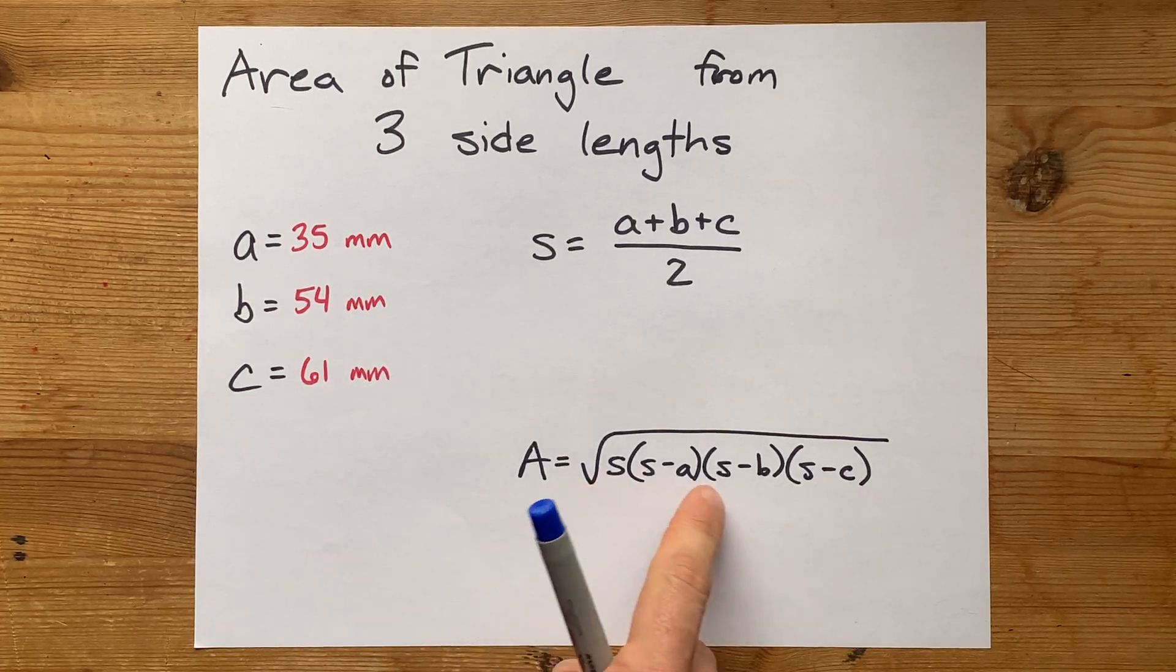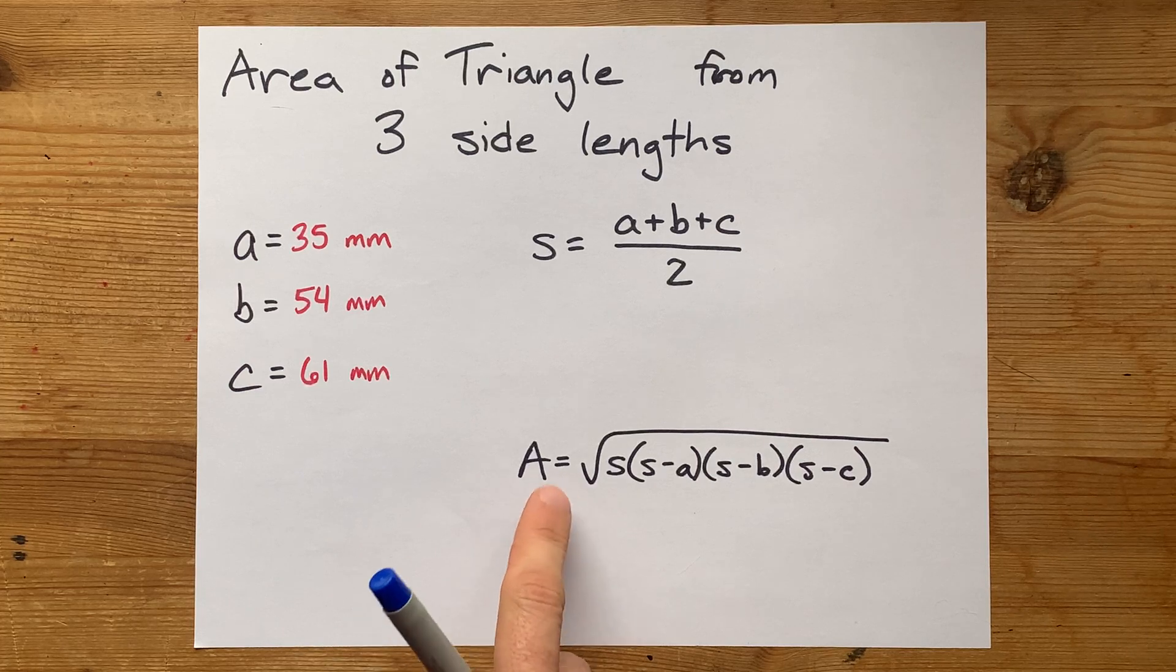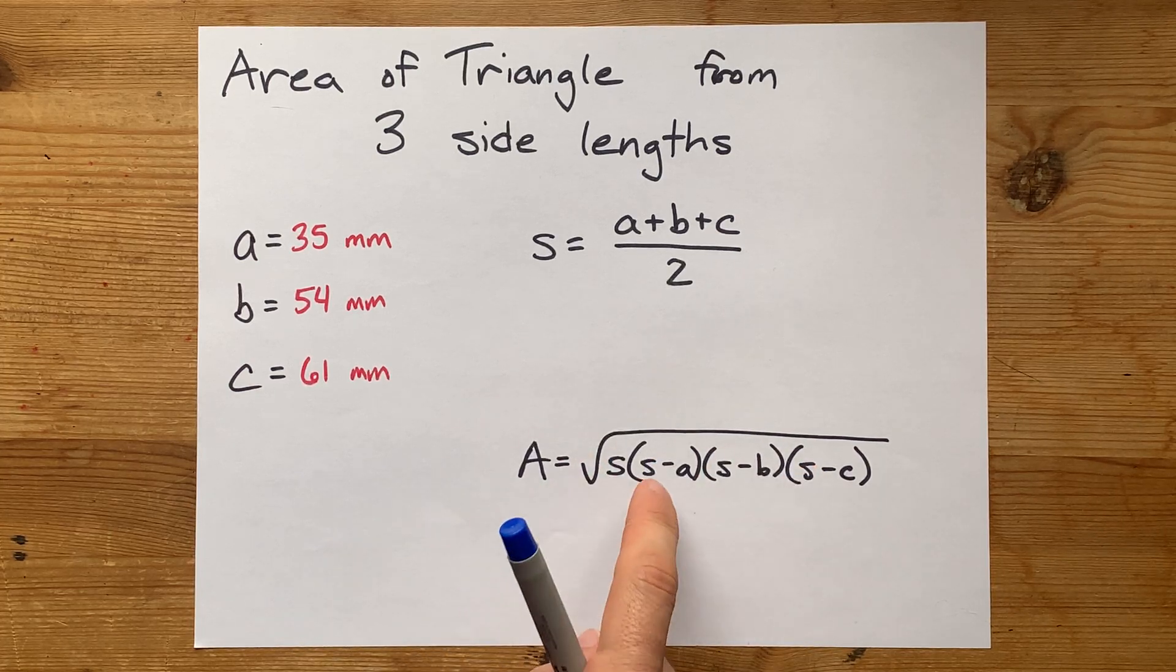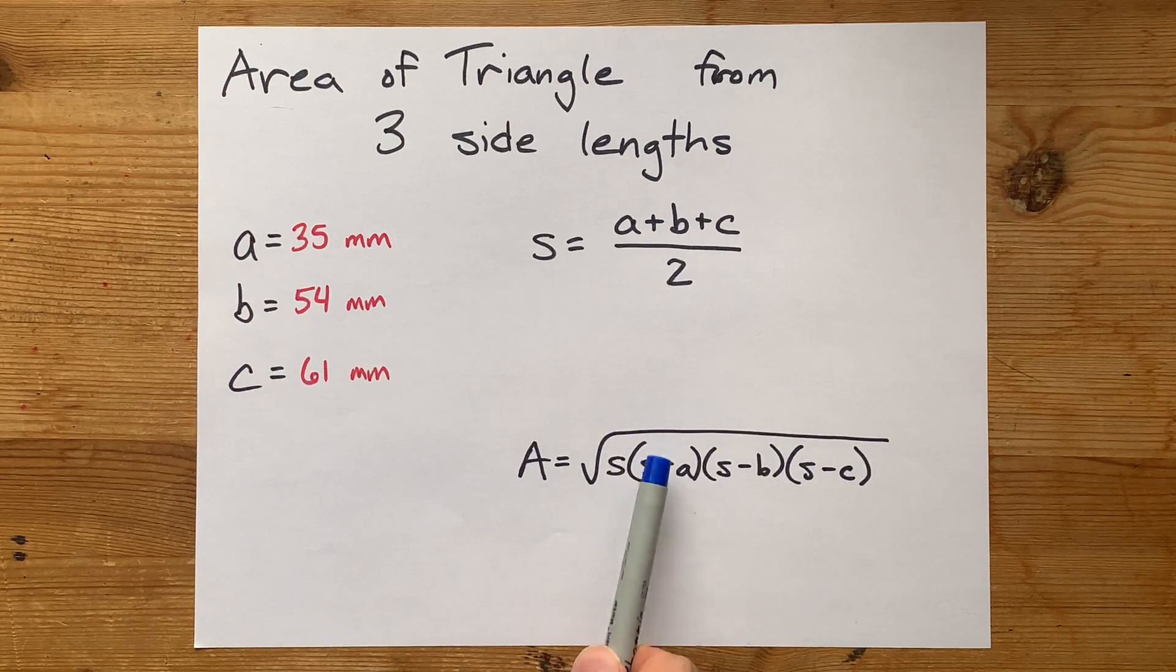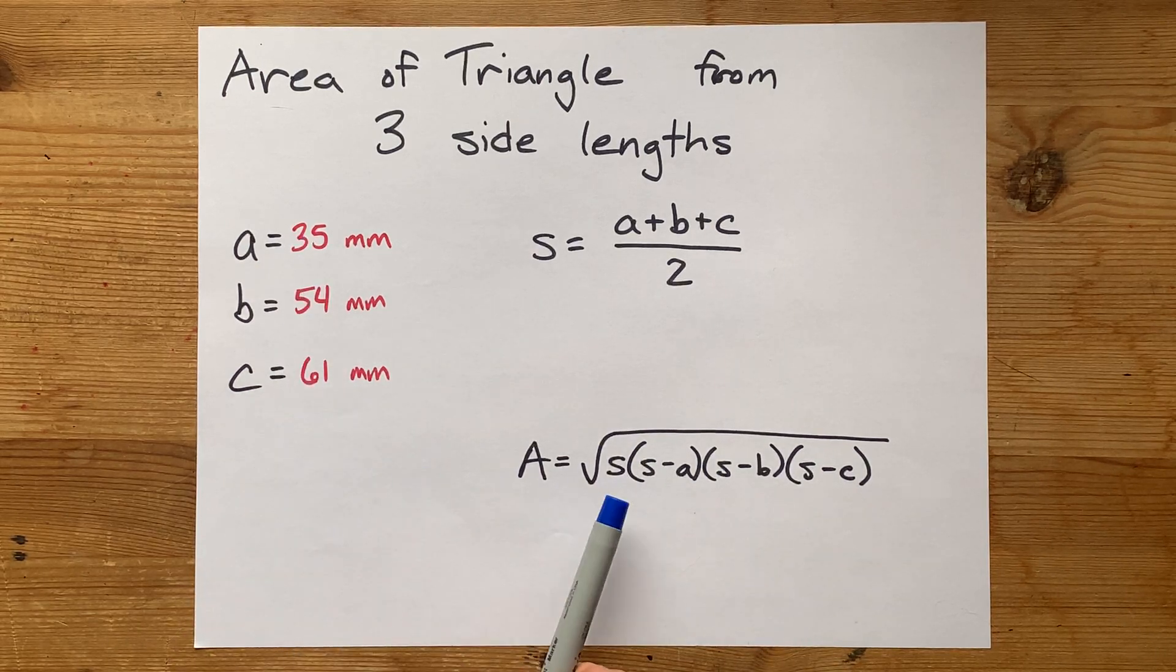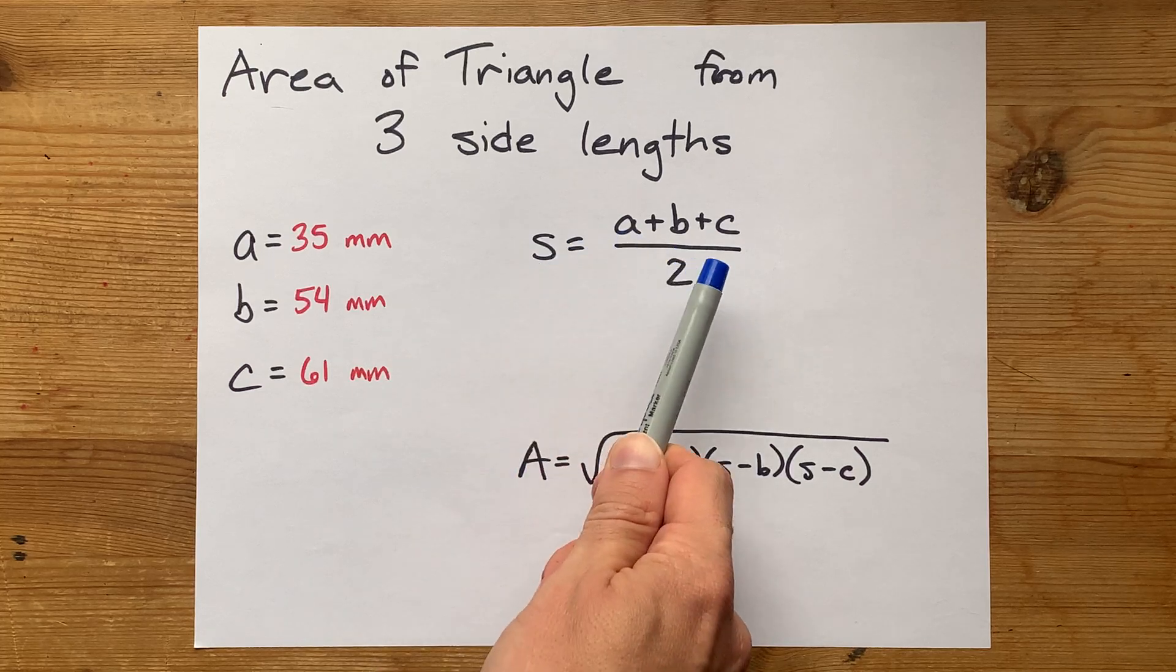We're going to use something called Heron's formula, the square root of s times s minus a times s minus b times s minus c. a, b, and c are the three side lengths, and s is called the semi-perimeter.